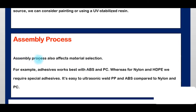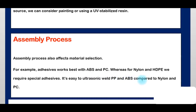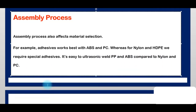Next is the assembly process. The assembly process also affects material selection. For example, adhesives work best with ABS and PC, whereas for nylon and HDPE we require special adhesive. It is also easier to ultrasonic weld PP and ABS compared to nylon and PC.